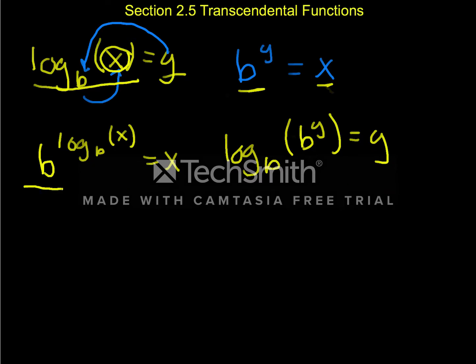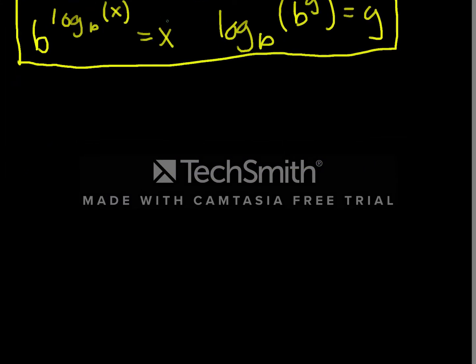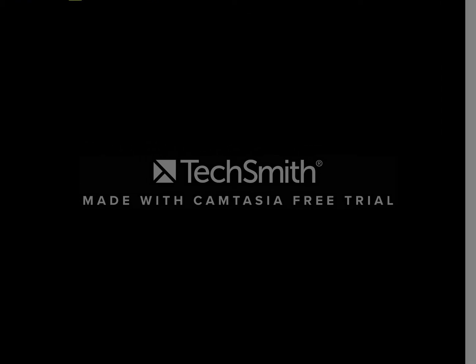So these are our key identities of being inverses. The logarithm undoes exponentiation and exponentiation undoes logarithm. So that's our basic idea of logarithms, how they're tied in with exponential functions. Now let's derive a couple, actually exactly three rules...